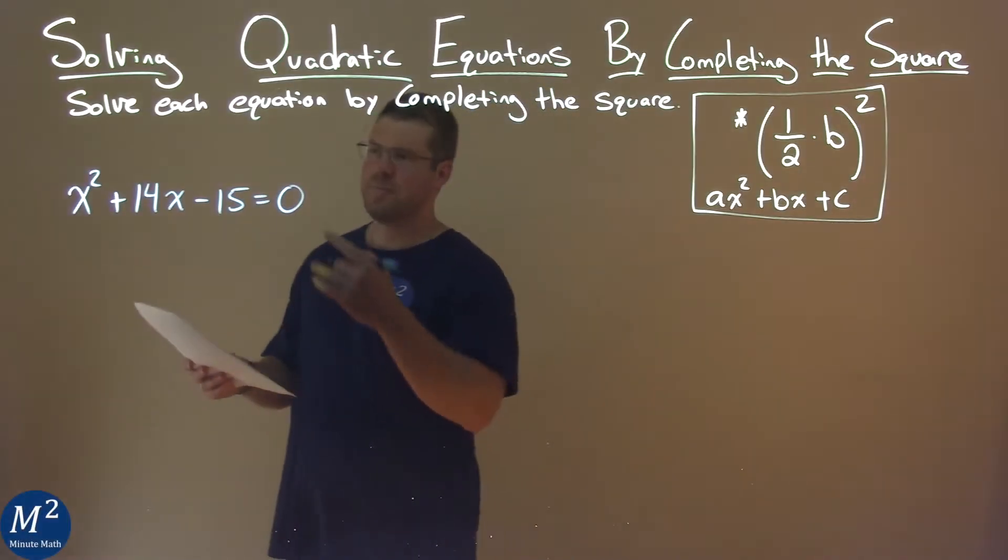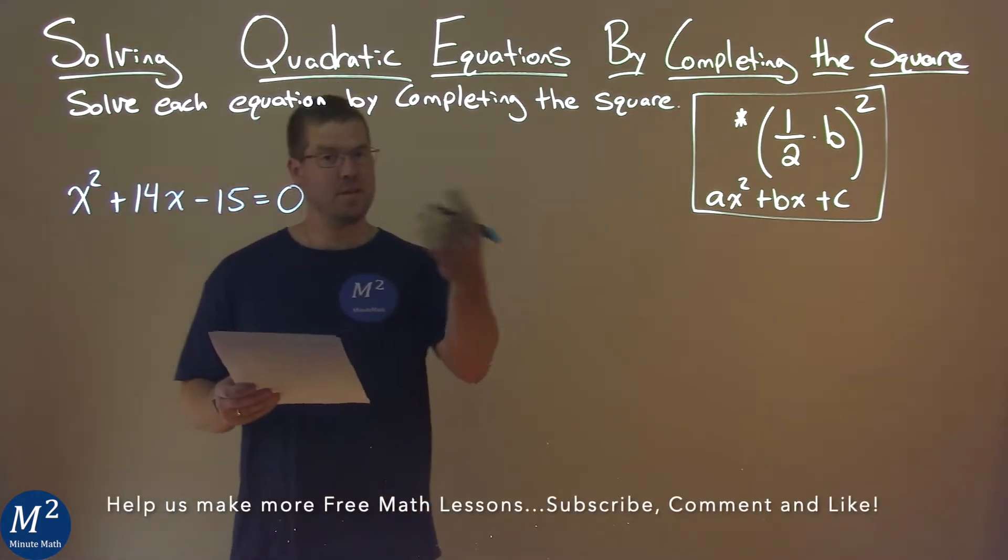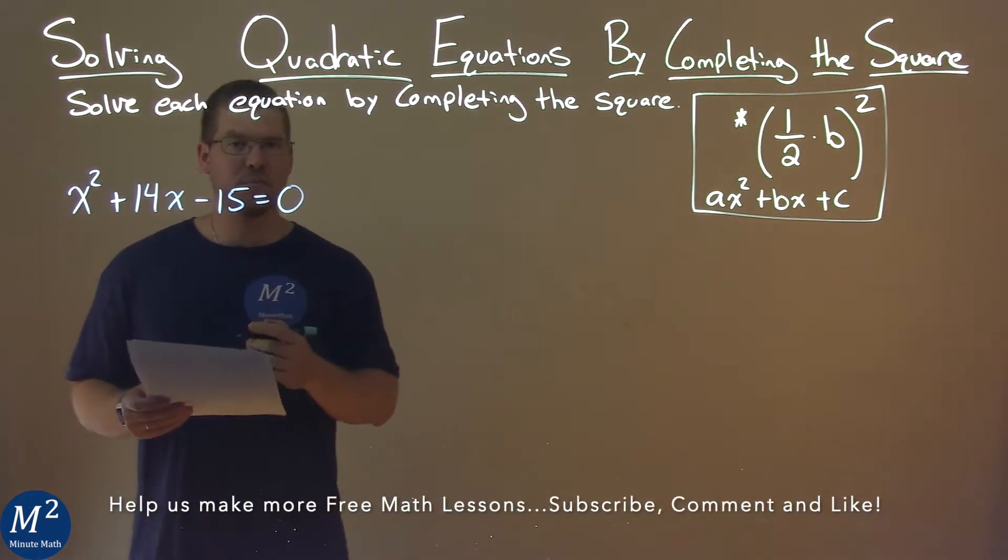We're given this problem right here: x squared plus 14x minus 15 equals 0, and we need to solve this by completing the square.